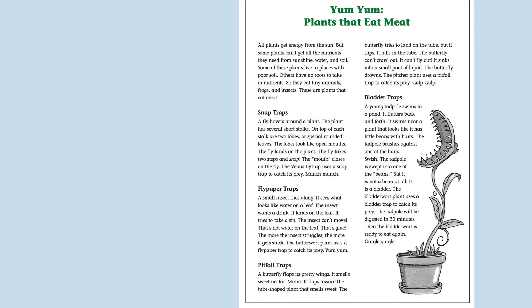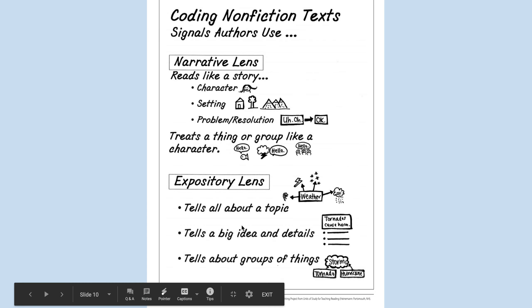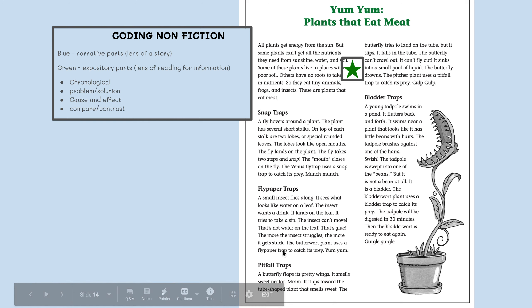Let's look at the next one — I'm only going to read the first paragraph: 'Yum, yum, plants that eat meat. All plants get energy from the sun, but some plants can't get all the nutrients they need from sunshine, water, and soil. Some of these plants live in places with poor soil. Others have no roots to take in nutrients. So they eat tiny animals, frogs, and insects. These are plants that eat meat.' Was this more like a story, or more like an expository? Did it tell about a topic with a main idea and then list details? Yes — we can say it is being read more like an expository.